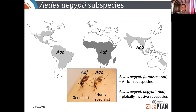Aedes aegypti aegypti, the human specialist, is thought to have evolved from generalist ancestors around 5,000 to 10,000 years ago, somewhere in western Africa, and its domestication allowed its global expansion during the slave trading period.